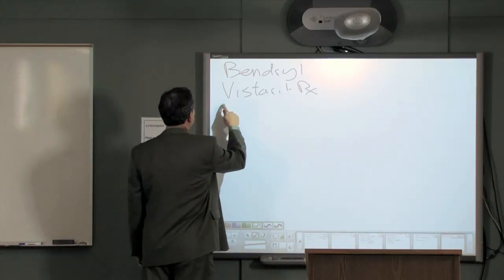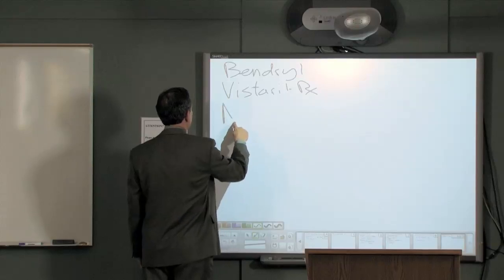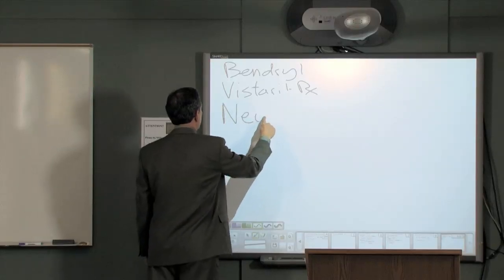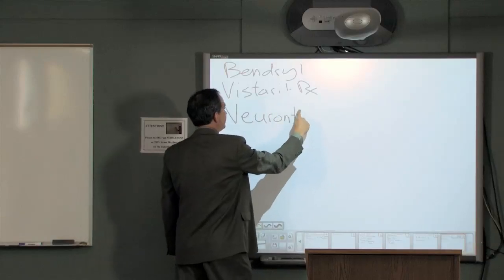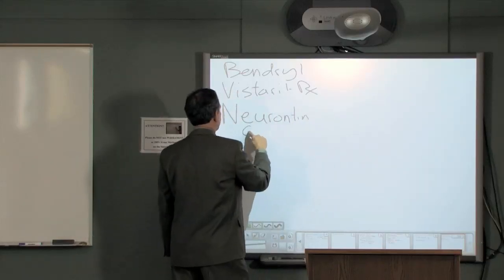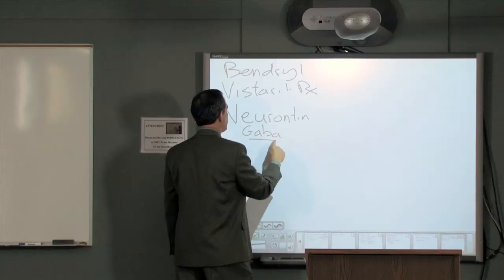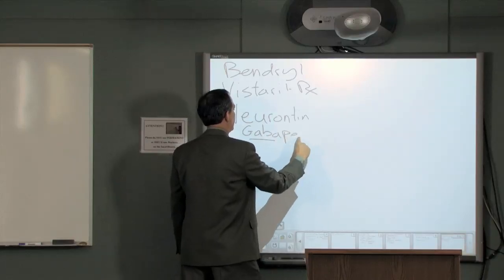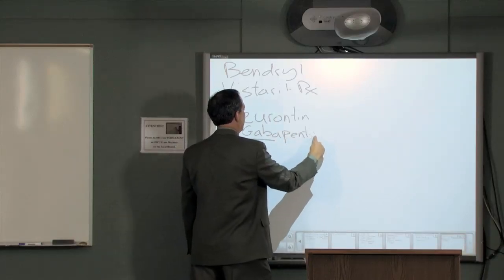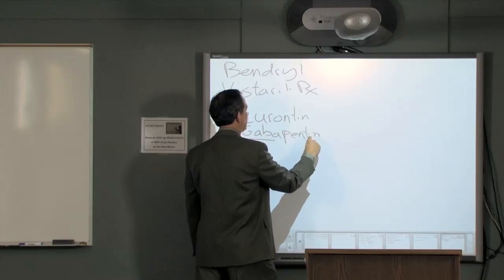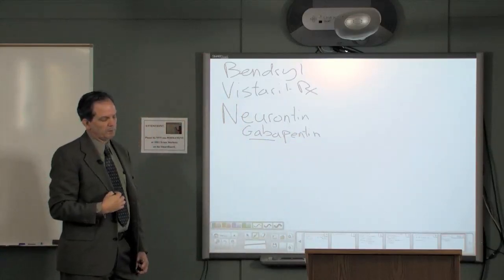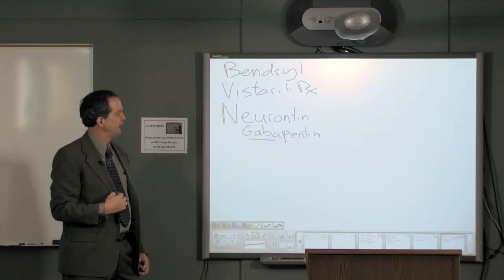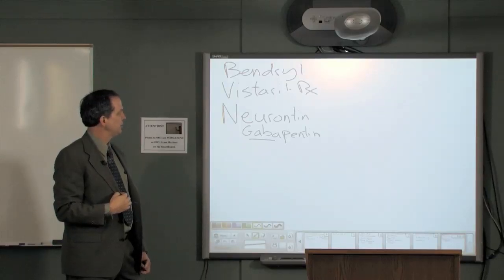And another medicine I mentioned already in terms of pain control is Neurontin. And the generic name is important to talk about. It's Gabapentin. And it works on GABA. And that's its mechanism of action in terms of control of neuropathy, pain, and also to help with sleep and anxiety.